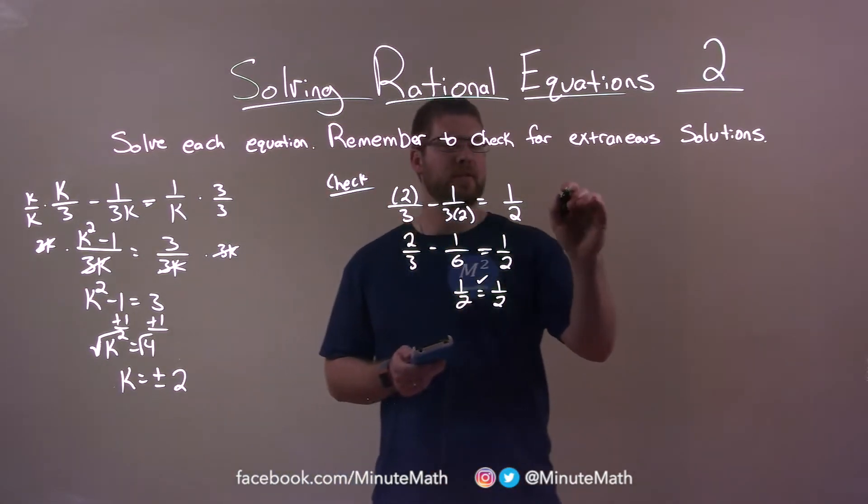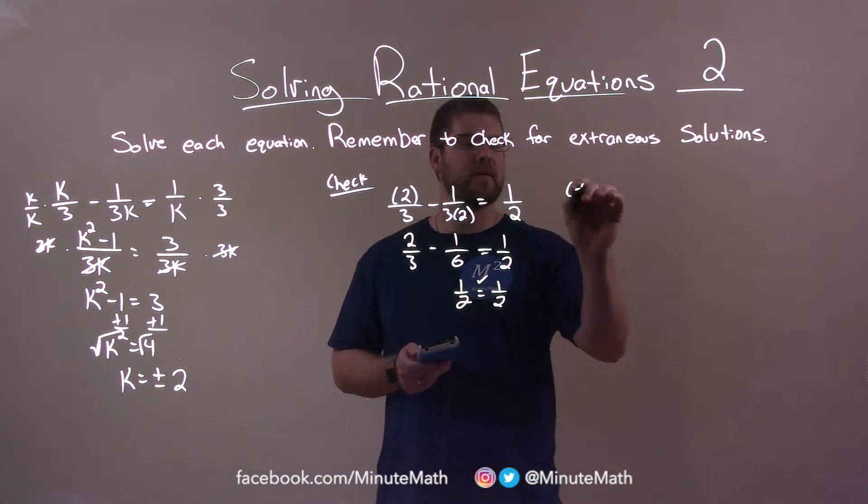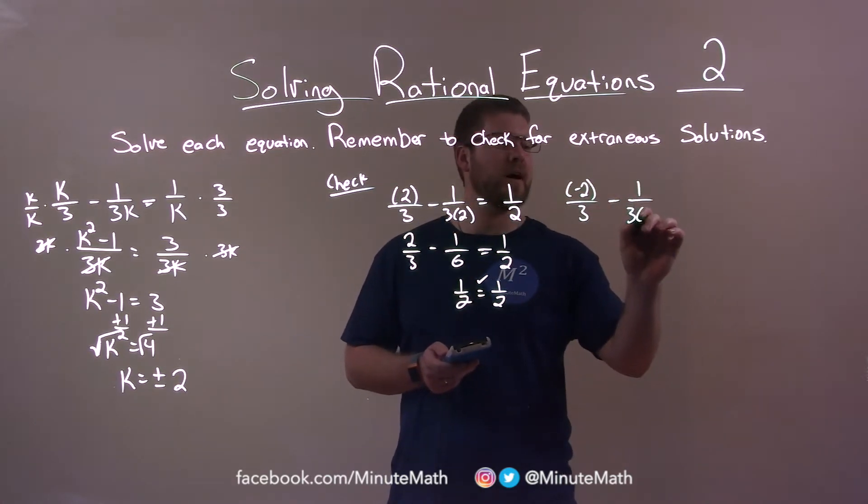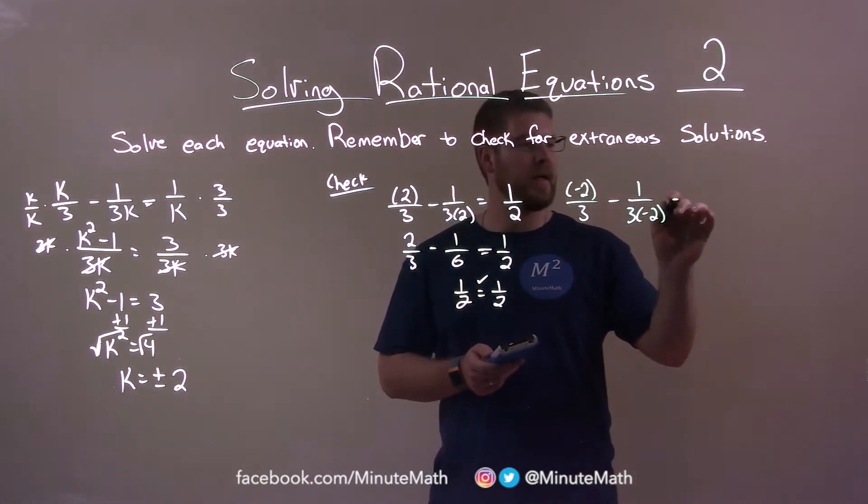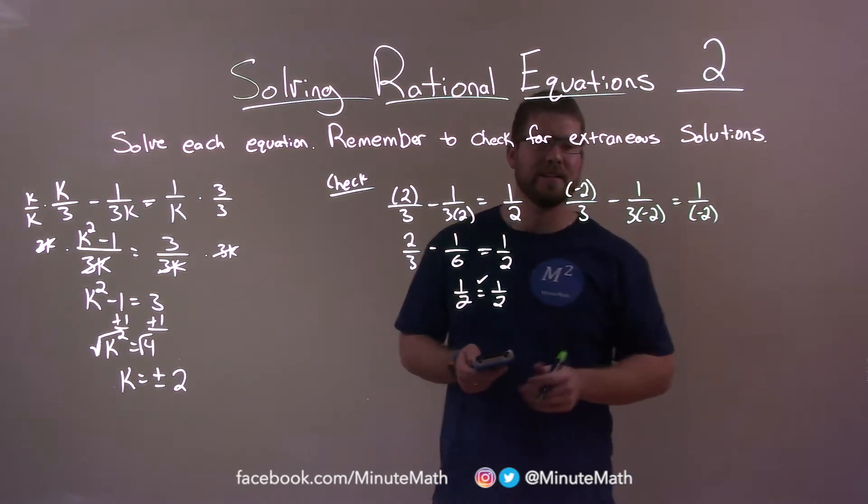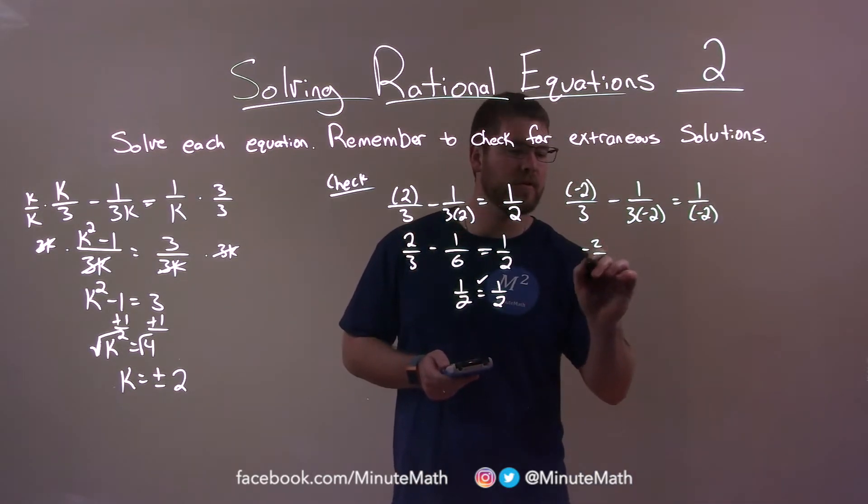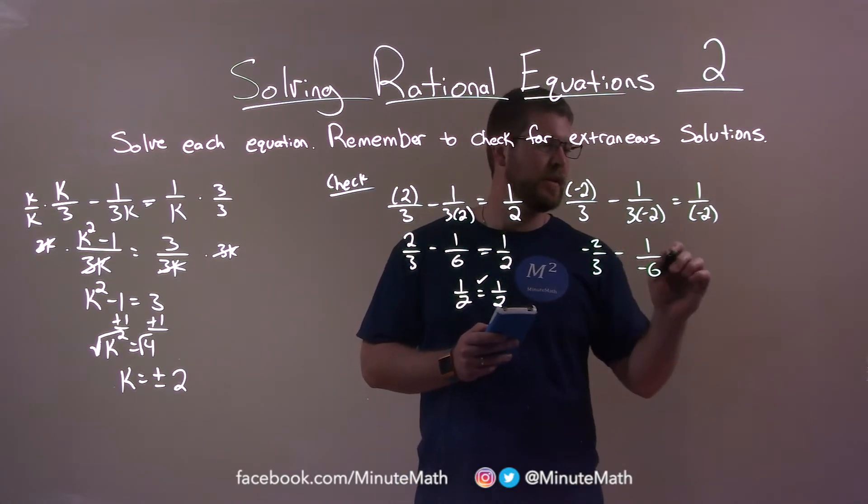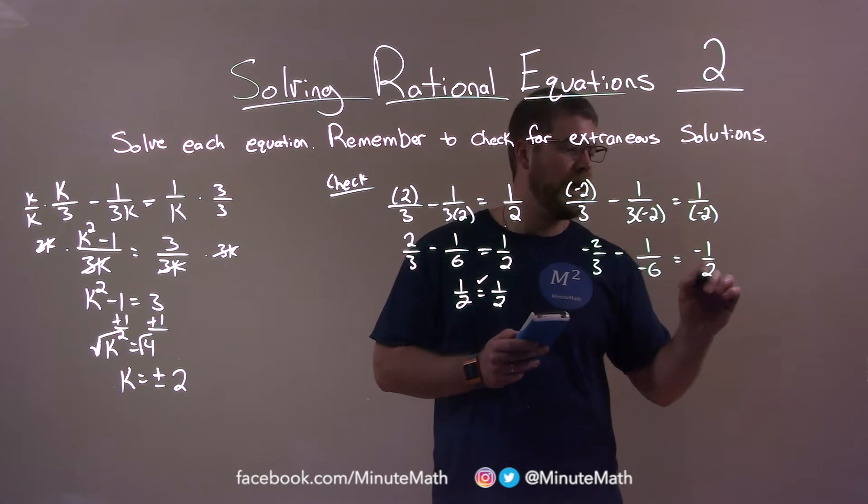Alright, let's try negative 2. Same idea. Negative 2 over 3 minus 1 over 3 times negative 2. And that's equal to 1 over negative 2. Let's see if that's true. Negative 2 thirds here minus 1 over negative 6 equals negative 1 half.